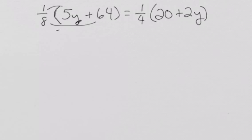So, we have five y over eight plus eight equals five plus two-fourths y. Or you could put one-fourth y, either way. It doesn't matter.